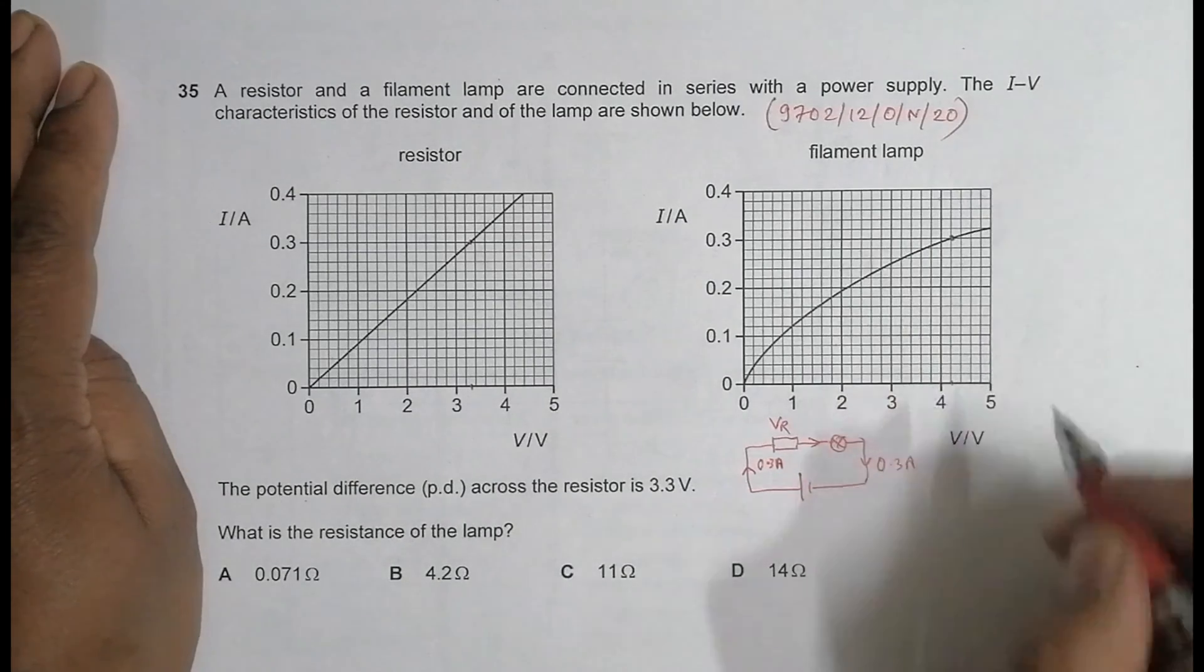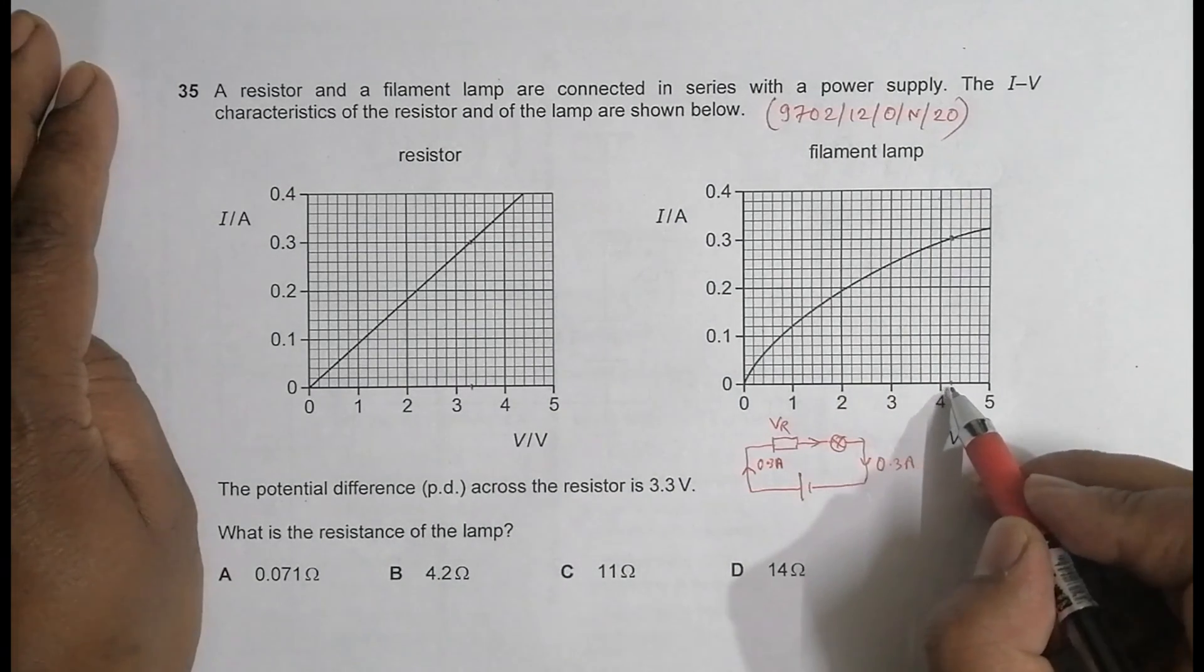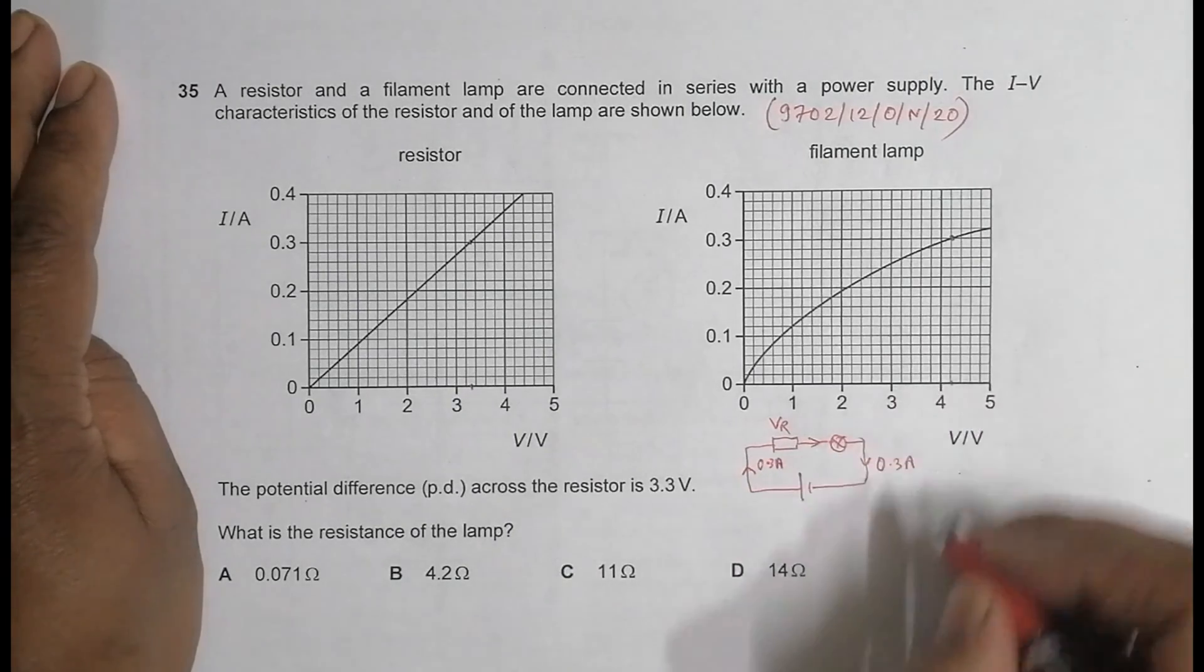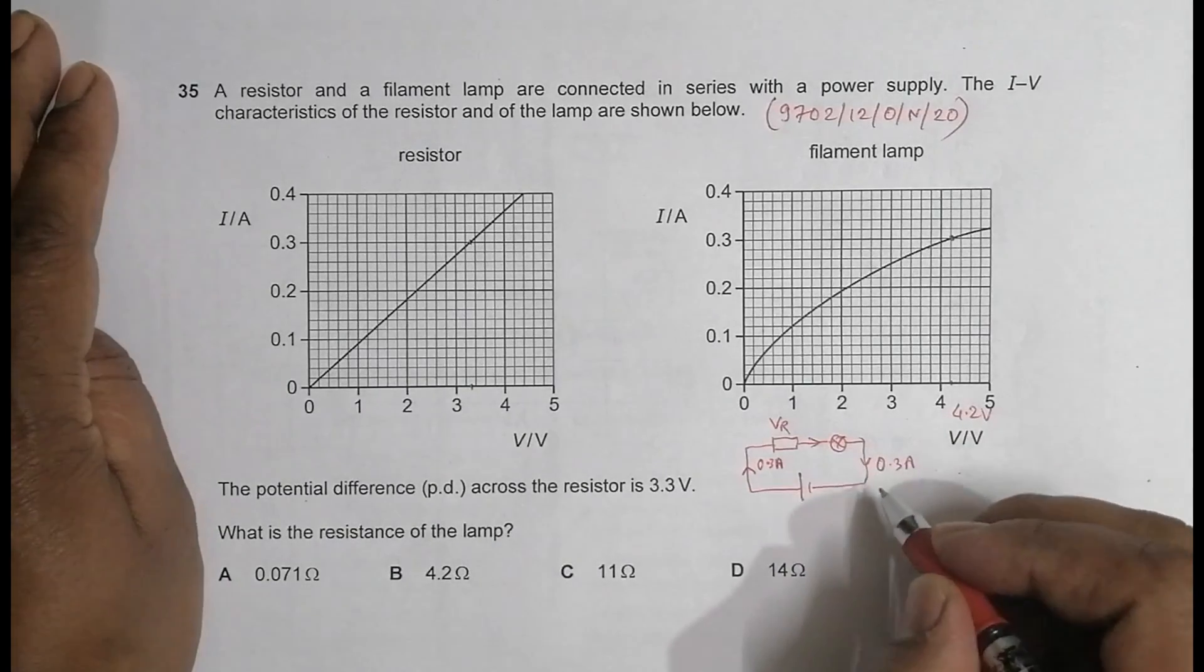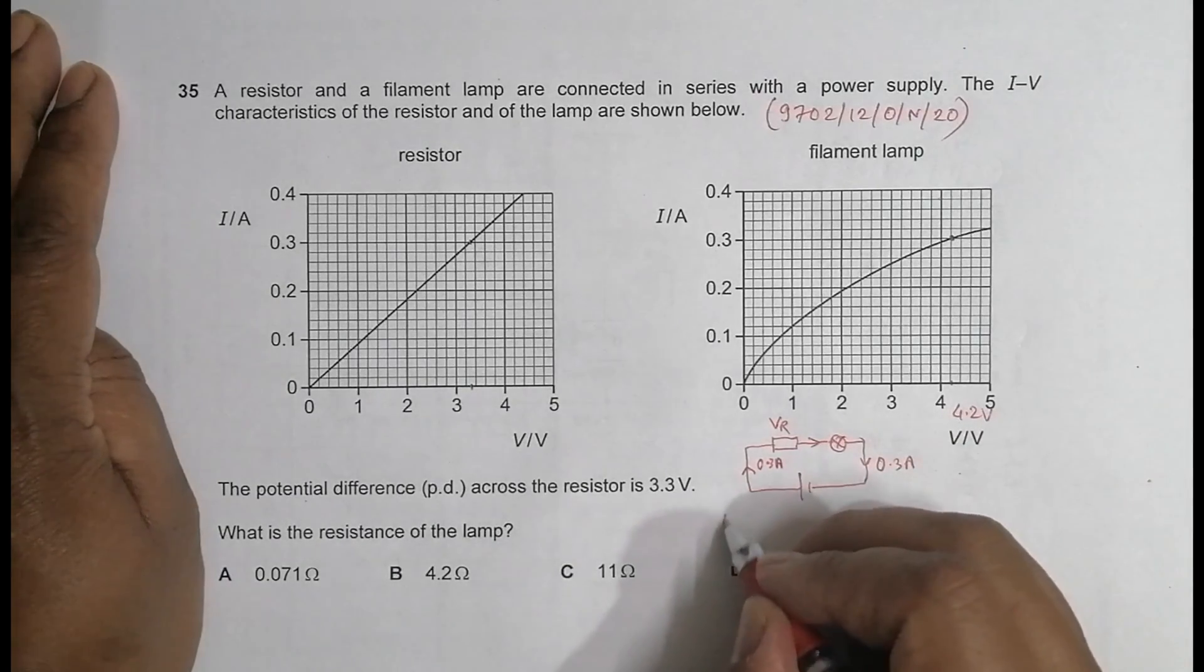So the PD across the lamp corresponding with that is here. Each division should be 0.2, so it is 4.2. So V is equal to 4.2 volts.